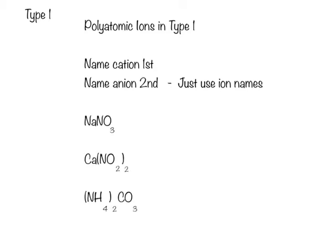First we have NaNO3. Na is sodium, and the NO3 minus ion is the nitrate ion. So we just call it sodium nitrate.